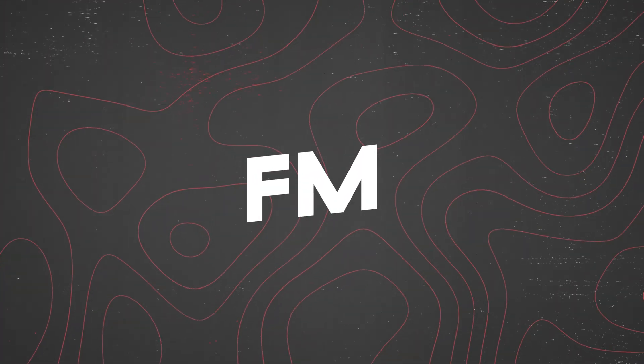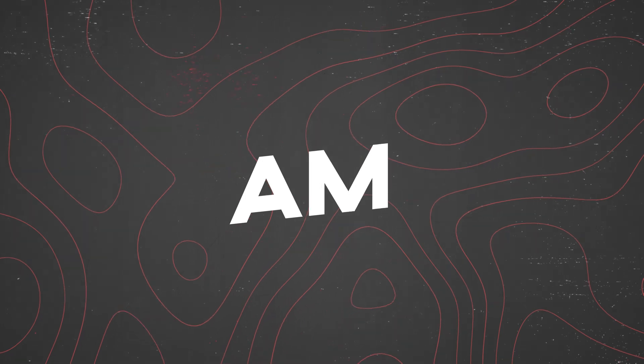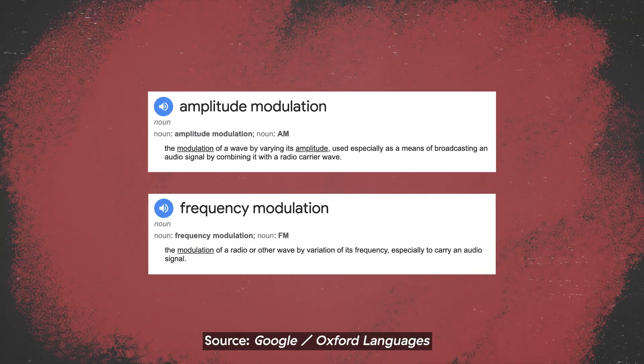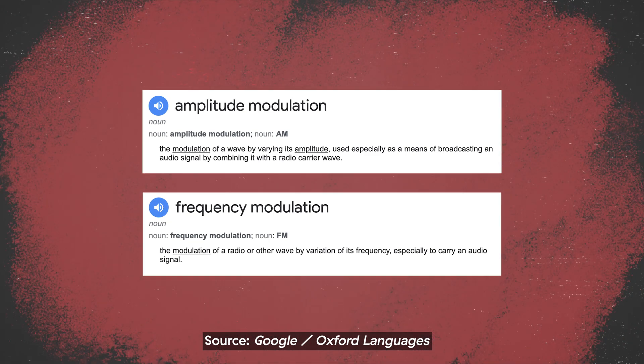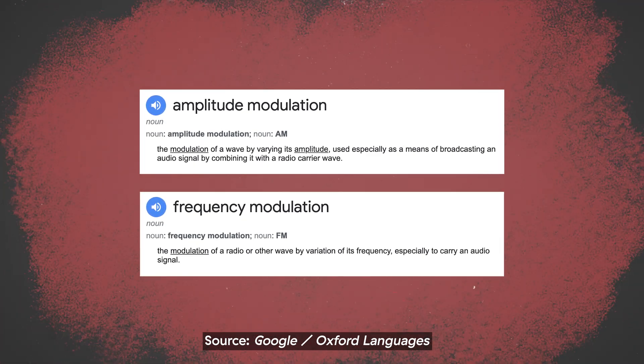Frequency modulation — FM — and amplitude modulation — AM. Frequency and modulation have already been covered. 'Amplitude' refers to the magnitude of a wave. FM and AM denote different methods of encoding information onto different radio signals: FM varies the frequency, and AM varies the amplitude. And that word comes from the Latin 'amplus', meaning large or spacious.